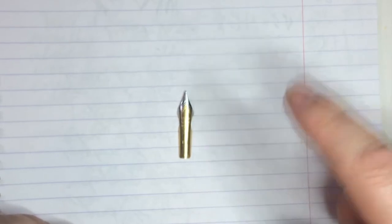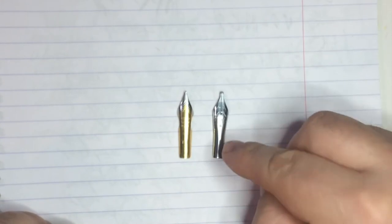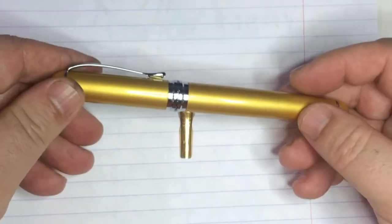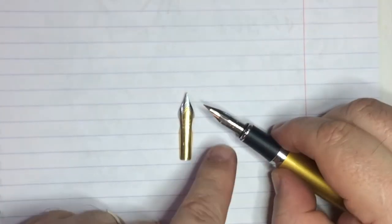Now, this nib is going to go into a pen, but the nib that actually goes in that pen is this one. This is a stub nib. That's normally what I would use in that tool pen, but for now, we are going to put it in this pen, which currently is housing this nib that we saw in the last video.